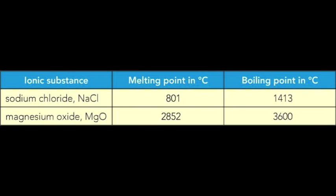Ionic substances have high melting points. They also have high boiling points. This means that they are usually solids at room temperature.